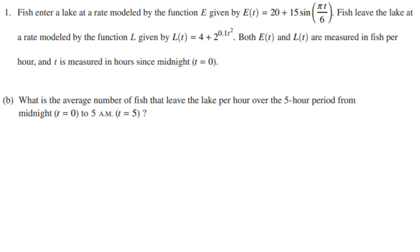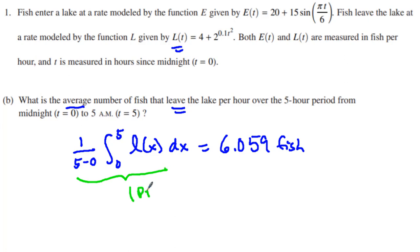So let's go to number two. We're taking a look at the average value, the average value of how many fish leave the lake. So we're using this L of T here, and we're going over the five hour period. So we're going from zero to five of this L of X or L of T dx. And anytime we do an average we do one over the subtraction of my limits, one over five in this case. And we end up getting about 6.059 fish. Now keep in mind we're not going to round that to the nearest whole number because we're trying to find an average, not just six fish. We get one point for setting up our average integral and one point for our answer as well.